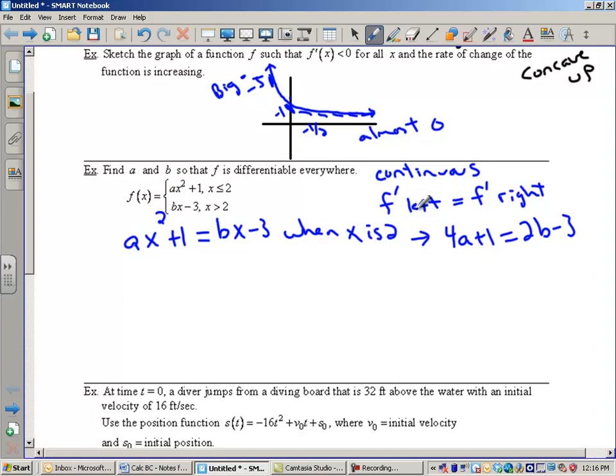So from the left, the derivative of ax squared plus 1 is 2ax. Bring the 2 down and subtract 1 off the exponent. And of course, we learned that the derivative of any constant is 0. So 2ax must equal the derivative of bx minus 3 is just b. So I have another equation and this must be true when x is 2. So my equation for matching the derivatives would be 4a equals b.